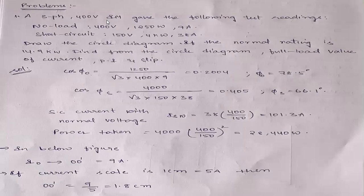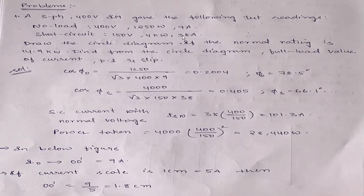So first problem. A three phase 400 volts induction motor gave the following test readings. First one, no load test: 400 volts, power 1250 watts, and current 9 amperes. Next, in the short circuit test: 150 volts, 4 kilowatts, and 38 amperes.